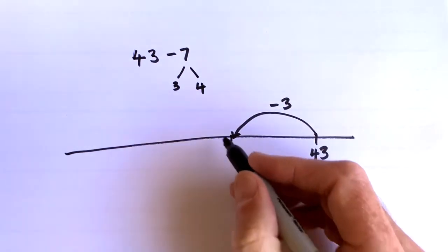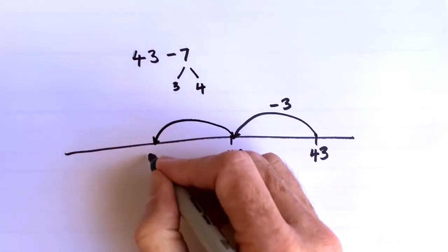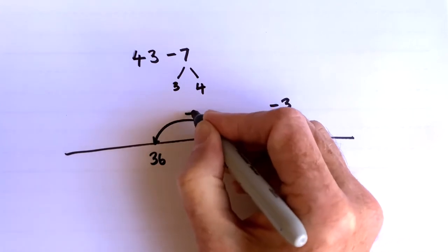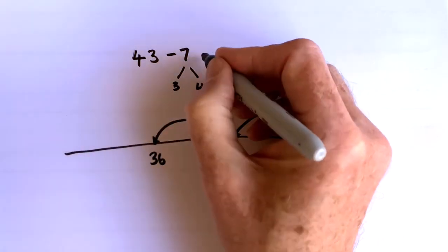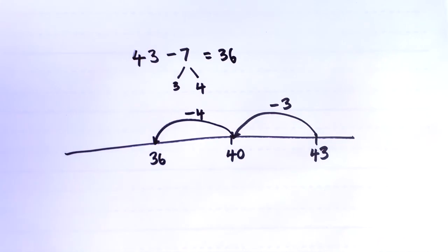I now need to take another 4 off 40, and I should know that brings me to 36. So 43 minus 7 is 36.